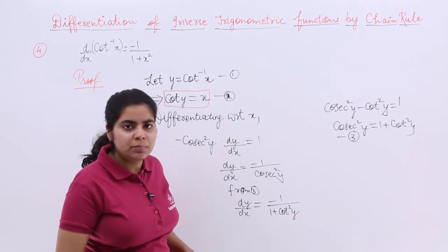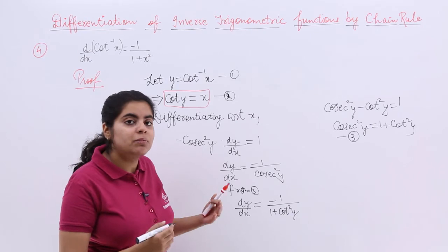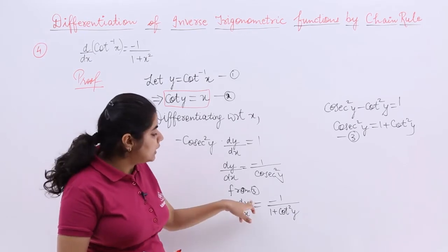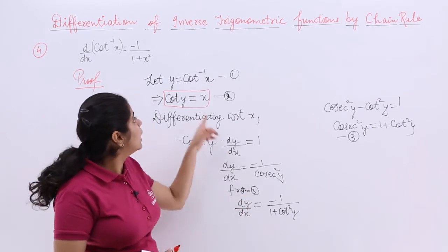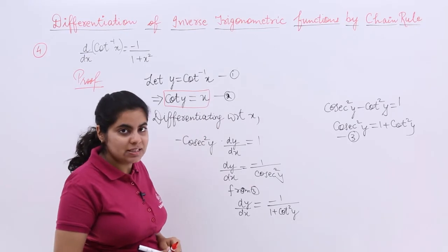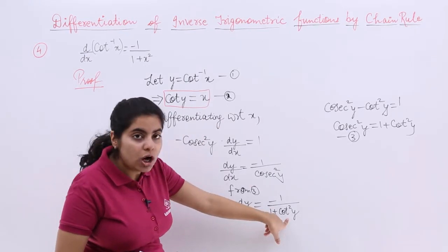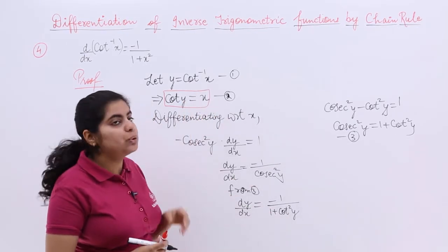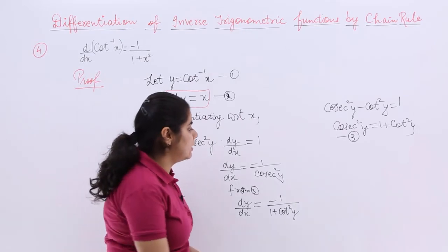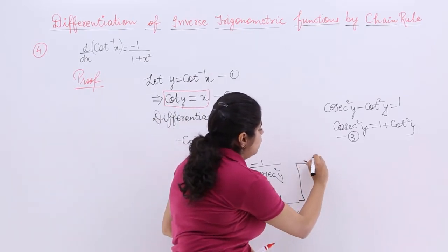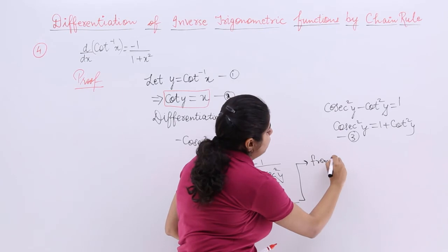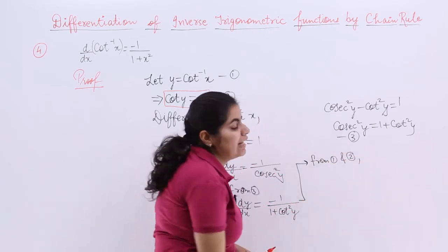Now this is not completed by far now. Because we have some more substitutions. What is y? Y from 1 is cot inverse x. What is cot y? Cot y from 2 is x. So I basically write after this step, from 1 and 2.